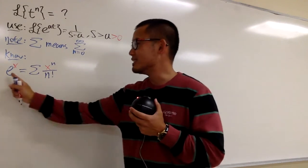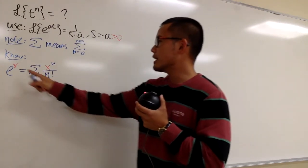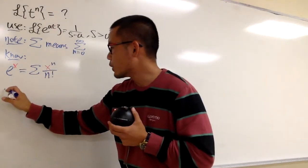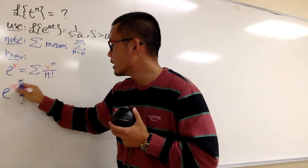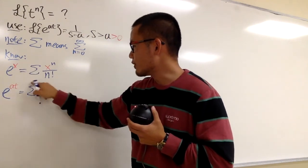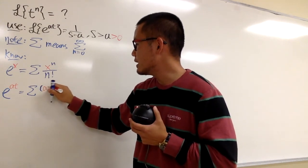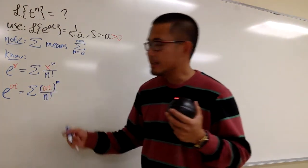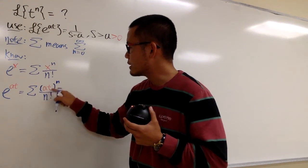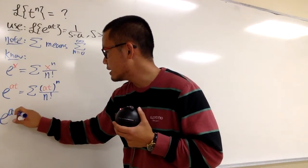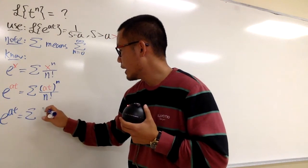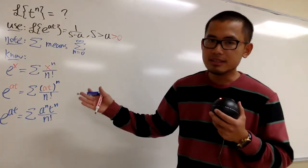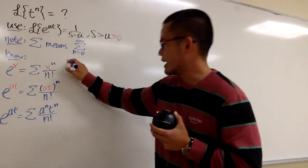With that, I can plug at into x here. So e to the at equals the summation when n goes from 0 to infinity of (at) to the nth power over n factorial, which we can write as the summation of a to the nth power times t to the nth power, all over n factorial. This is one of the key facts we'll use.